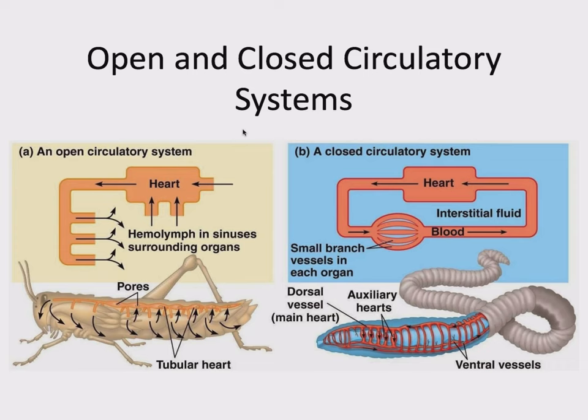There's a bit of this in the chapter that I'm skipping because we've done this already. For the rest of this chapter, what we're going to be talking about is closed circulatory systems. We've said all we need to say about open in previous chapters. So let's start by talking about blood.